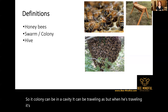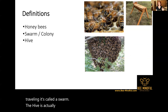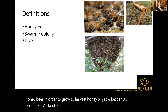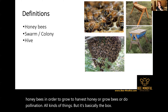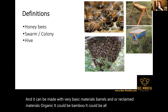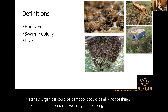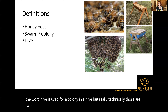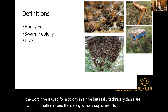A hive is a man-made box in which beekeepers put colonies of honeybees in order to harvest honey, grow bees, do pollination, and all kinds of things — it's basically the box. It can be made with very basic materials like barrels, reclaimed materials, bamboo, all kinds of things, depending on the kind of hive you're looking at. Sometimes the word hive is used for a colony in a hive, but technically those are two different things: the colony is the group of insects, and the hive is the box or the cavity in which they live.